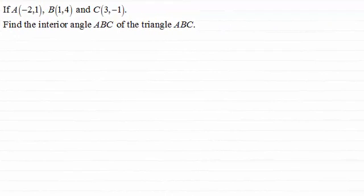Hi there. This is a follow-up to my previous video on the scalar product or dot product, where I showed you how you could find the angle between two vectors. I've got an example here which demonstrates this idea — it's a very important example, one that you've got to take care over, as I'll show you. It's finding the interior angle of a triangle.